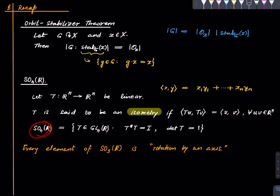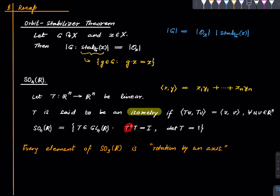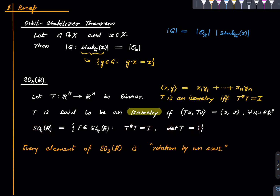More precisely, T is defined as an isometry if T*T equals the identity linear map, where T* is the adjoint of T with respect to the standard inner product. SO(n,R) consists of those isometries whose determinant is 1. Geometrically, T preserves orientation. This is a group and in fact a subgroup of GL(n,R).